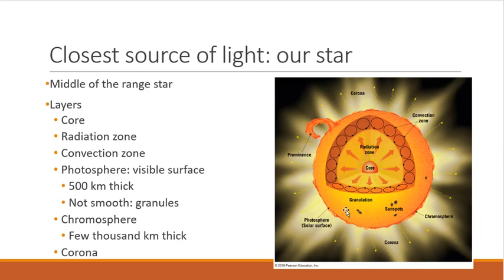So most of our light comes from the sun, our star. It's a middle-of-the-range star. Like all of the other large bodies in our solar system, it has layers. So there's a core to the sun. Outside the core is the radiation zone. Then we have a convection zone. So we have particles moving within the sun. The photosphere is what we actually see. It's the visible surface. It's about 500 kilometers thick. And it's not smooth. It's actually granules. So don't look directly at the sun. But when we get images from space of the sun, we see that it's not a smooth surface.